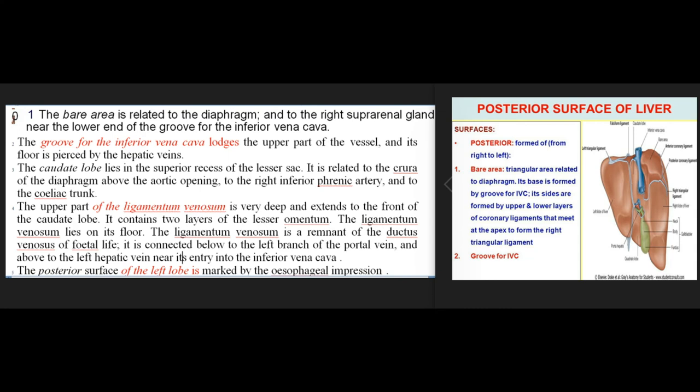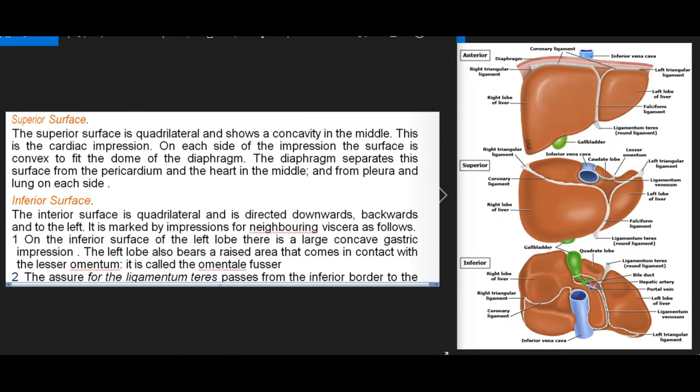The ligamentum venosum is a remnant of the ductus venosus of fetal life, connected below to the left branch of the portal vein and above to the left hepatic vein near its entry into the IVC. The posterior surface of the left lobe is marked by the esophageal impression. Superior surface: quadrilateral, showing a concavity in the middle — the cardiac impression. On each side the surface is convex to fit the dome of the diaphragm, which separates it from the pericardium and heart in the middle and from the pleura and lung on each side.